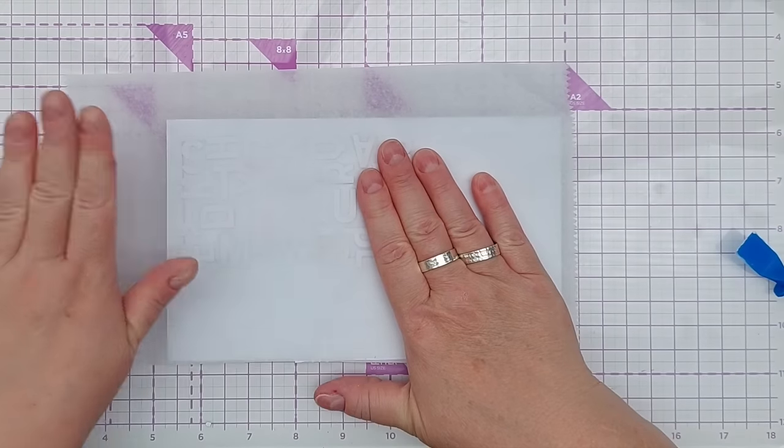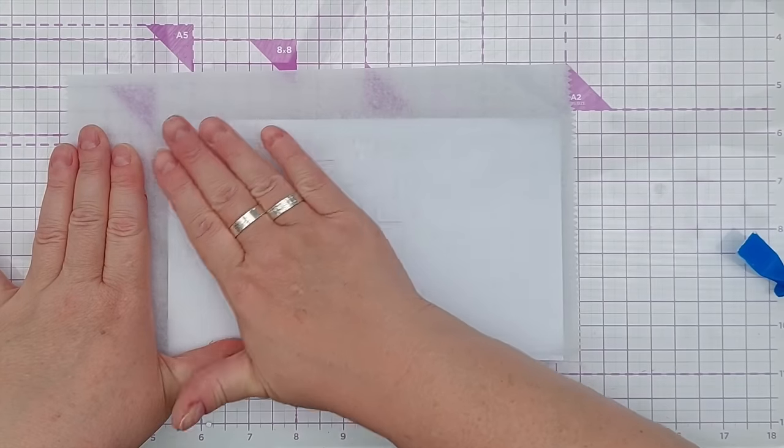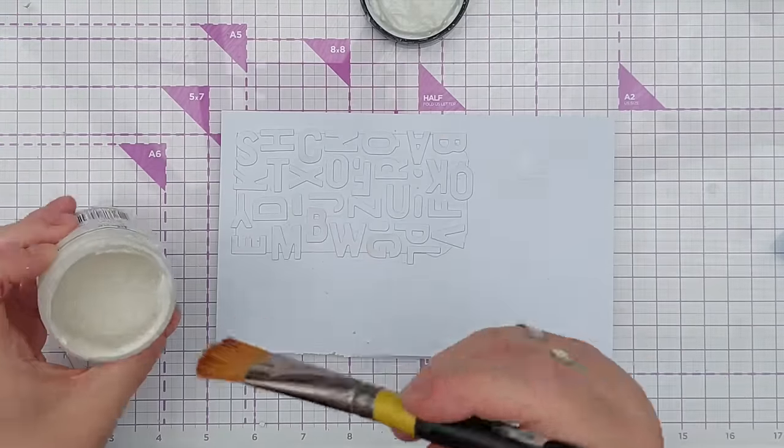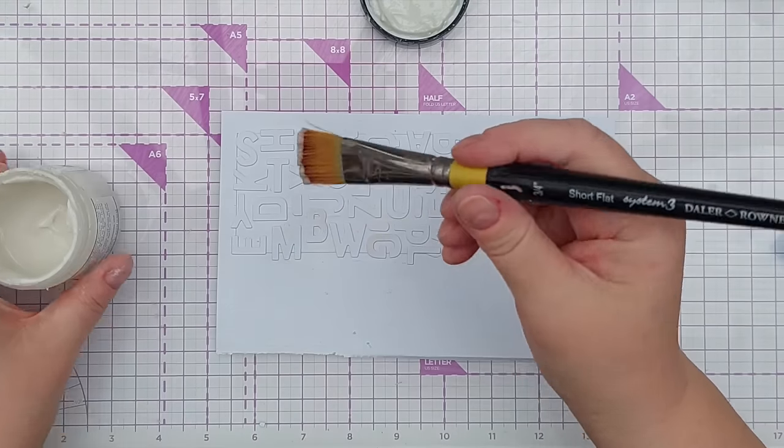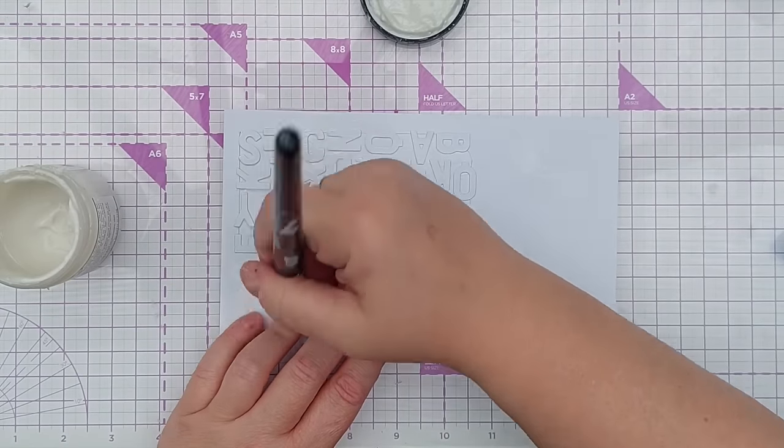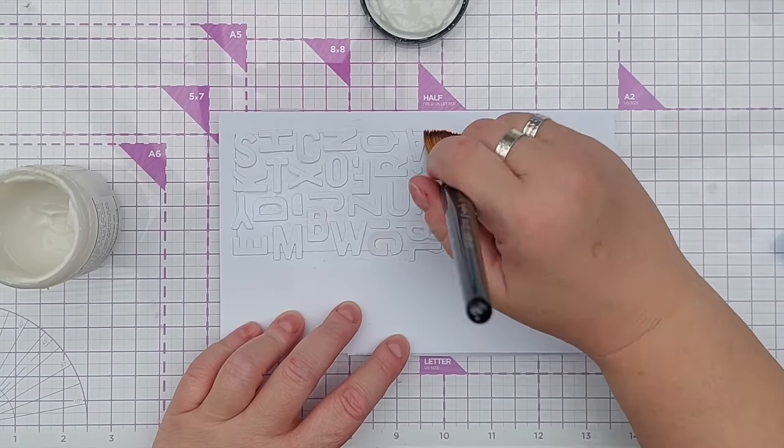So those are all stuck down and now I'm going to get a bit of non-stick deli paper. You could use greaseproof paper or the release paper from a sheet of sticky. Now I'm going to take some smooth clear gesso to prime my letters or my textured paper.